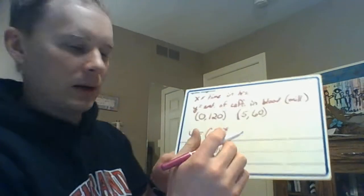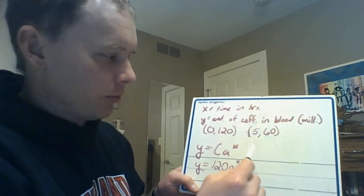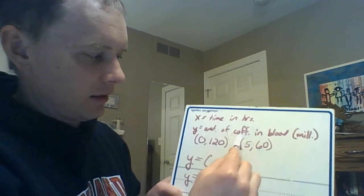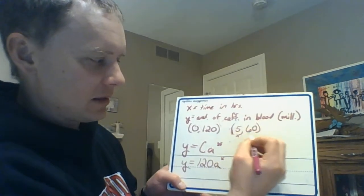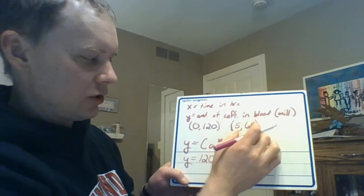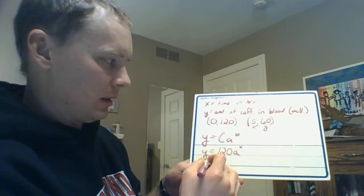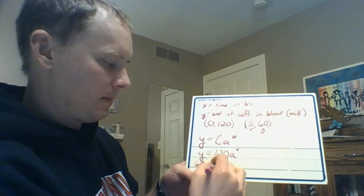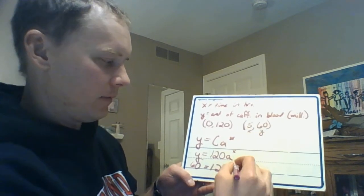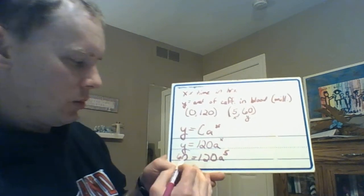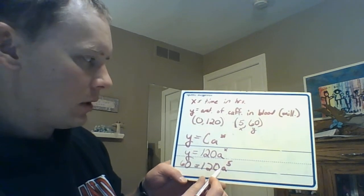But here's how we're going to do this. We're going to let algebra really help us here. We're going to say that this point here has to be on our function. This is an x and this is a y. So let's just plug those values in and solve basically. So we're going to plug 60 in for y. We are going to plug five in for x. So we have 60 = 120a to the fifth power.